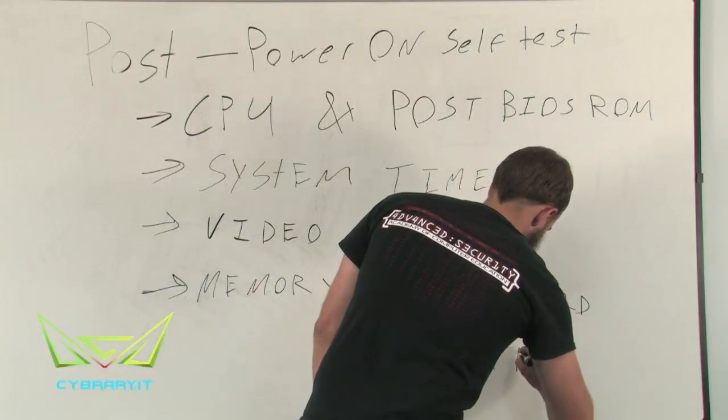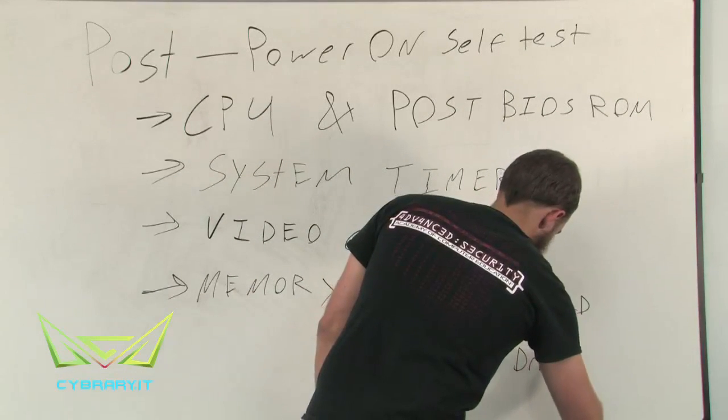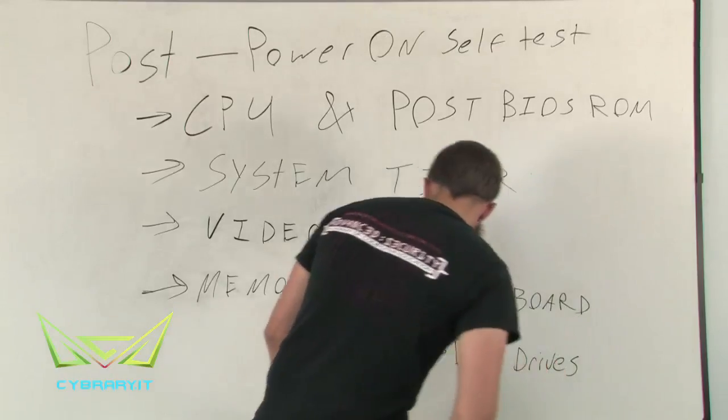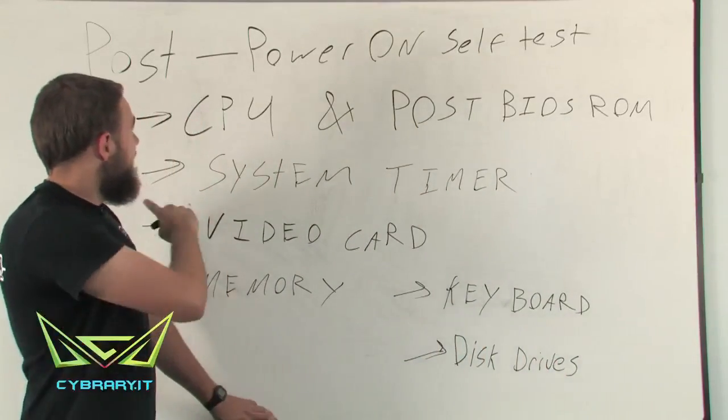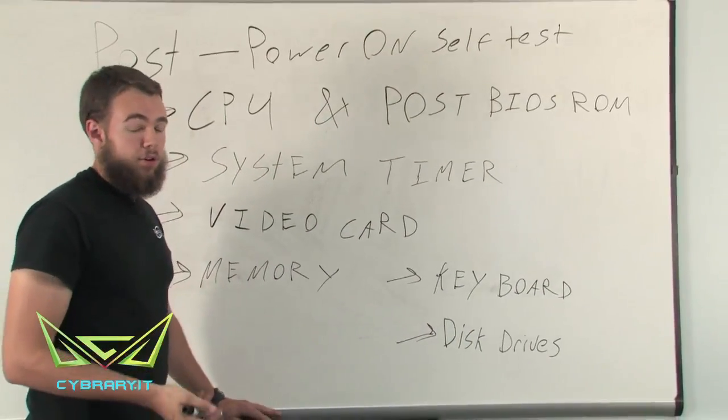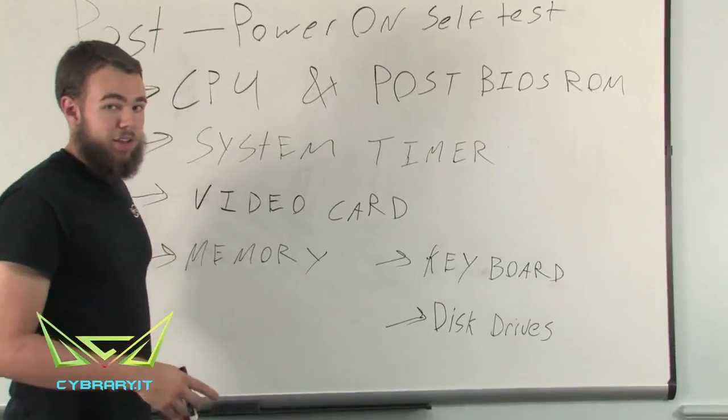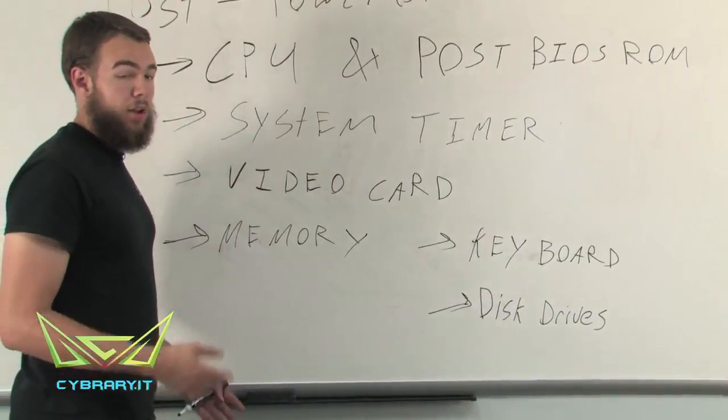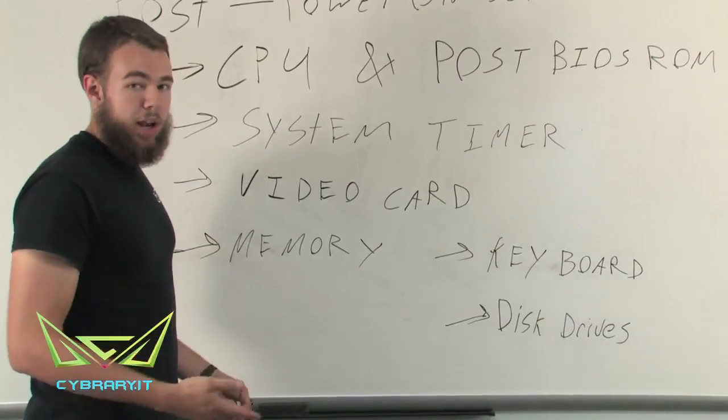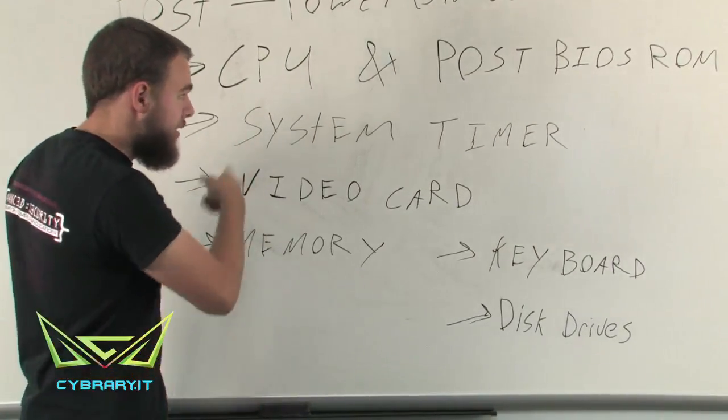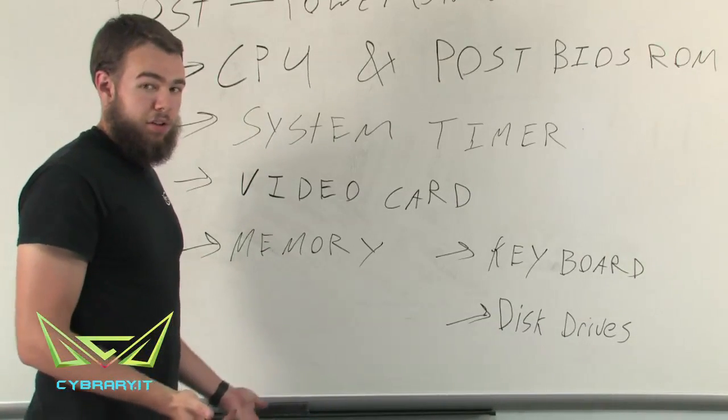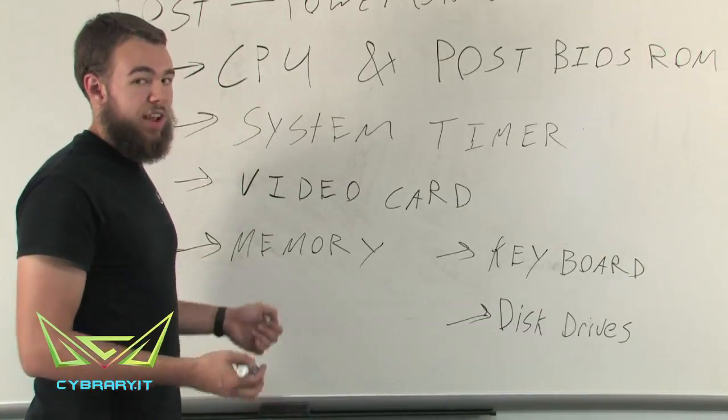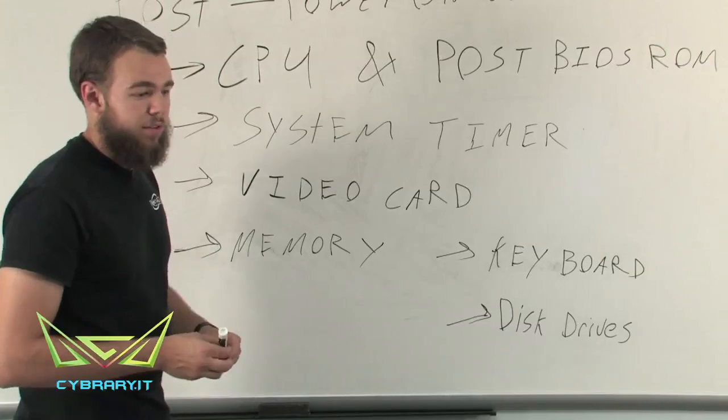Then after our memory, we have two more steps. We have our keyboard and finally our disk drives. This test occurs every time we turn on our computer and it runs through each of these in order for the BIOS to know that the computer is running or the computer is able to run, able to load the operating system, because if any of these are missing, our computers aren't going to be able to run. That's why it performs this test right at the beginning when it starts up.